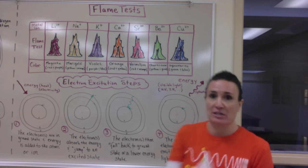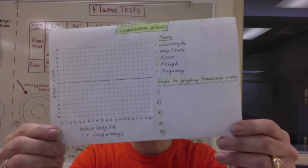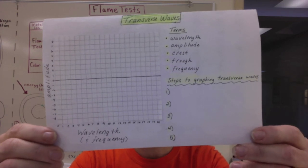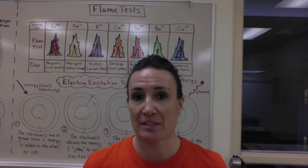The last section on the inside of the foldable will be how to draw and label a transverse wave so that we can understand the movement of the electron if it acts as a wave.